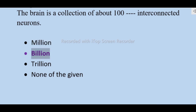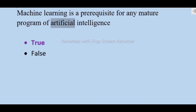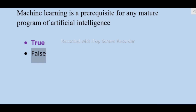The brain is a collection of about 100 billion interconnected neurons — not million, trillion, none of the given. Machine learning is a prerequisite for any mature program of artificial intelligence — true or false — false.